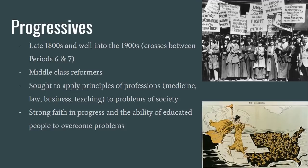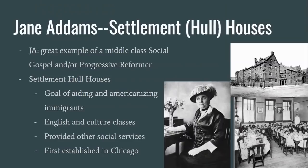Progressives were middle-class reformers, many highly educated, that sought to apply the principles of their profession to solving the problems of society. They had a strong faith in progress and the ability of educated people to overcome societal problems. Jane Addams and the Hull House movement is a definite need-to-know for APUSH. Beginning in Chicago and then spreading to cities across the country, Hull Houses had the goal of aiding and Americanizing immigrants. They had classes taught in English and American culture and also provided other social services, including meals and children's services.